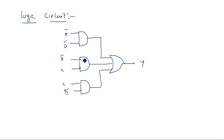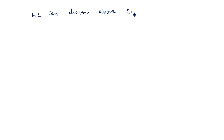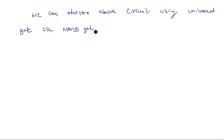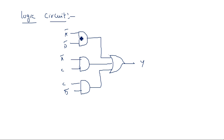We can also draw the above circuit using a universal gate like the NAND gate. When you have an AND-OR logic circuit, it can be easily converted to a NAND-NAND circuit by converting each gate into its corresponding NAND gate. So AND gates should be converted to NAND, and the OR gate should also be converted to NAND.